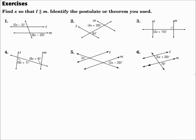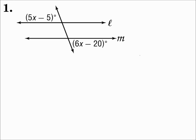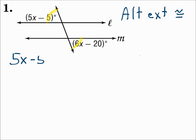Find X so that L is parallel to M. Identify the postulate or theorem that you used. Number one: we have two angle measures given. Those are opposite corners outside the two lines — that's alternate exterior angles. The rule says if alternate exterior angles are congruent, then the lines are parallel. So let's make their measures equal each other: 5X minus 5 equals 6X minus 20.